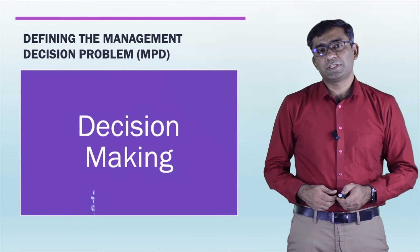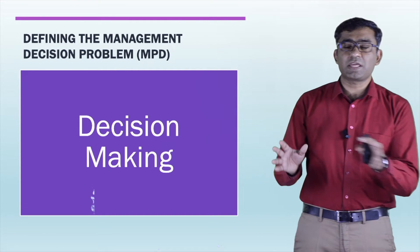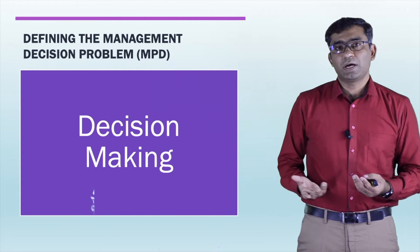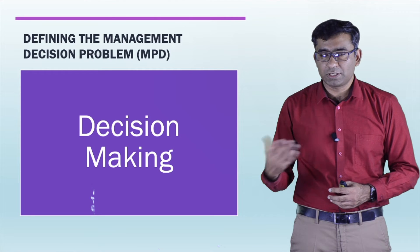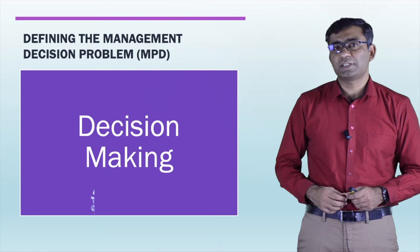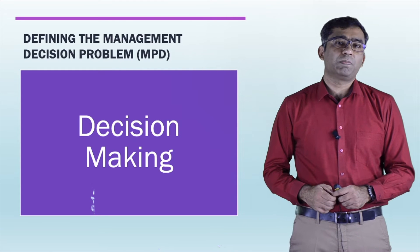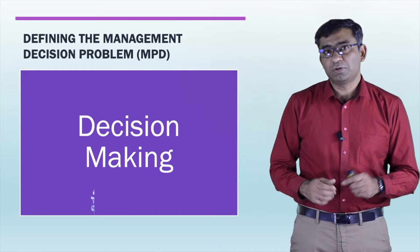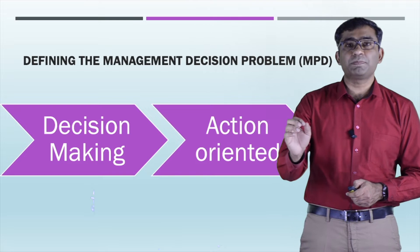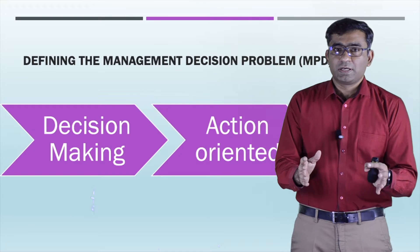The management decision problem is basically a decision-making process when organizations have different options and they want to choose one option. You have alternative solutions — whether you want to introduce a new product, improve your supply chain, or improve your marketing strategy. All these are decision problems. Marketing research will provide all the information required to make this decision.